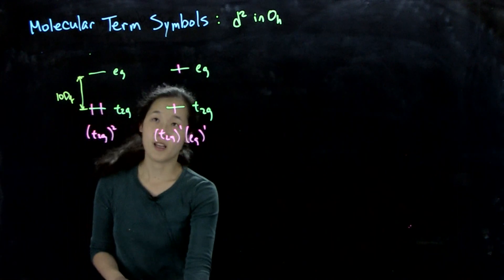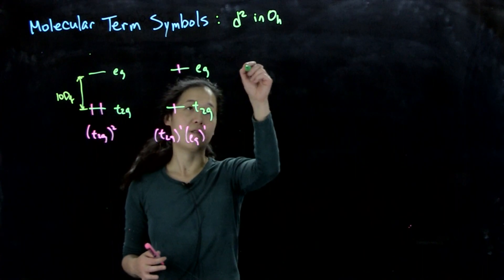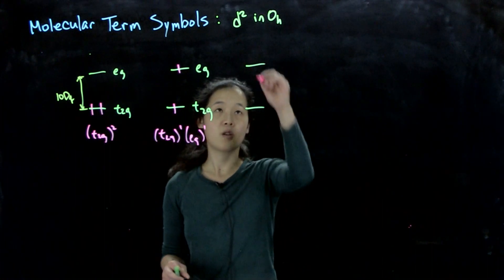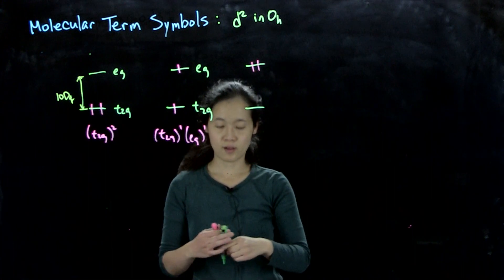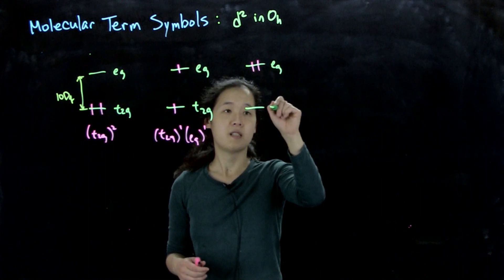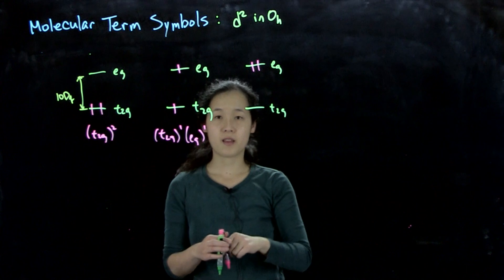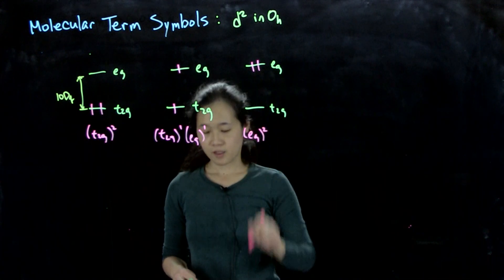Okay, and then our third configuration would be if we have both our electrons in the eG orbitals, so eG T2g, and then this would therefore be an eG² configuration.